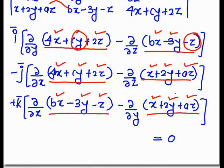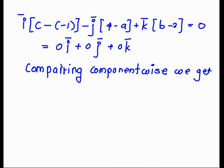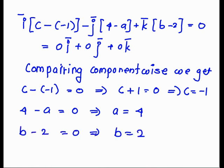Since curl F bar equals 0, comparing component-wise: c − (−1) = 0 gives c = −1; 4 − a = 0 gives a = 4; b − 2 = 0 gives b = 2.